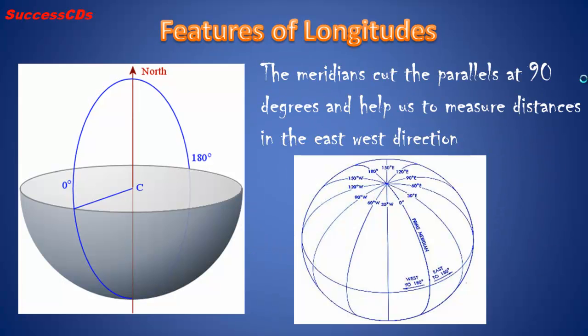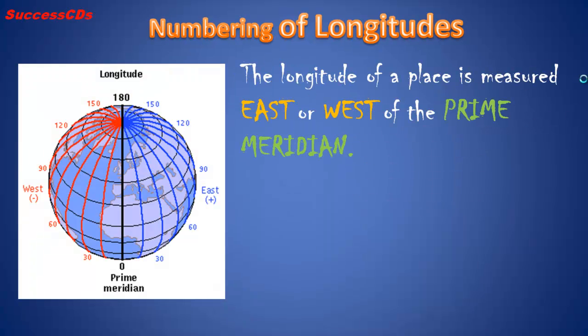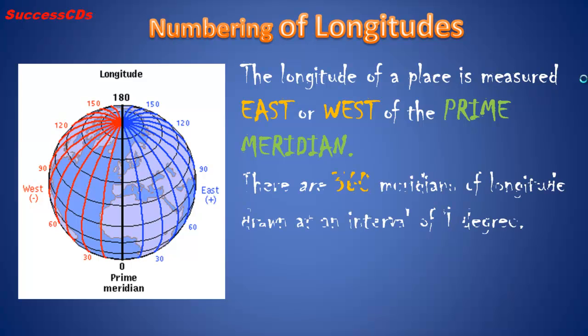The meridians cut the parallels at 90 degrees and help us to measure distances in the east-west direction. The longitude of a place is measured east or west of the prime meridian. There are 360 meridians of longitude drawn at an interval of 1 degree.